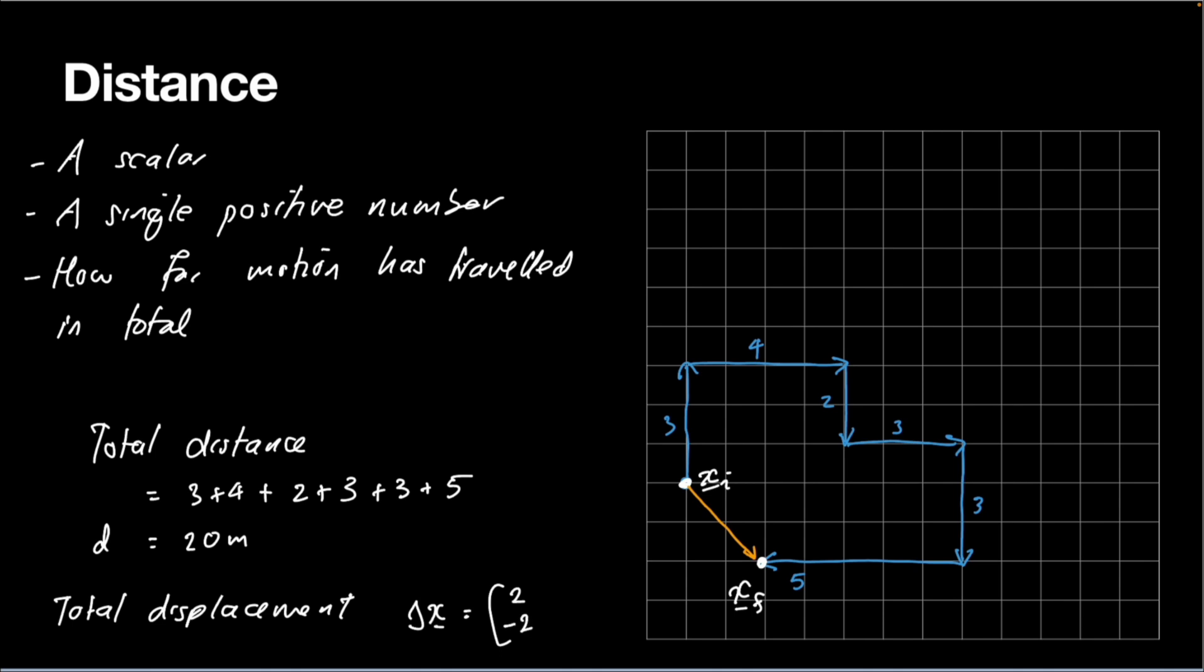And you can see my overall displacement is quite small, but my total distance traveled is quite big. So that's the difference between those two words distance and displacement. Displacement is just final position minus initial position, whereas distance is how far you went on the way from your initial position to your final position.